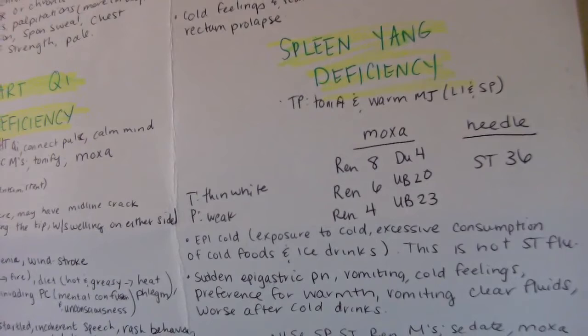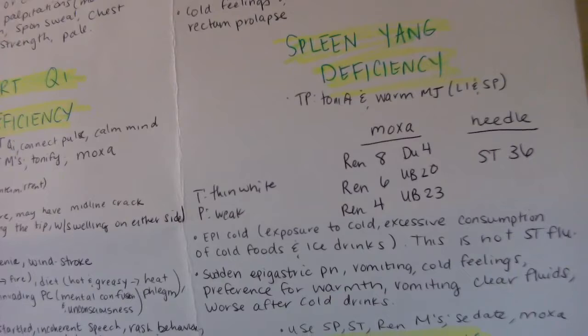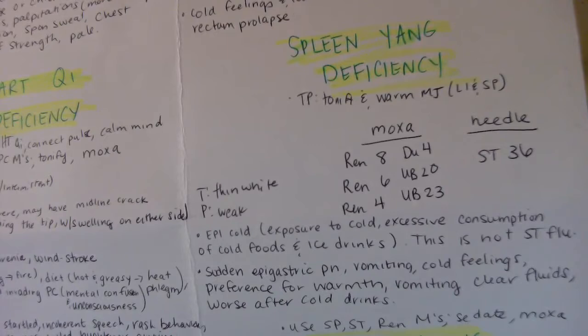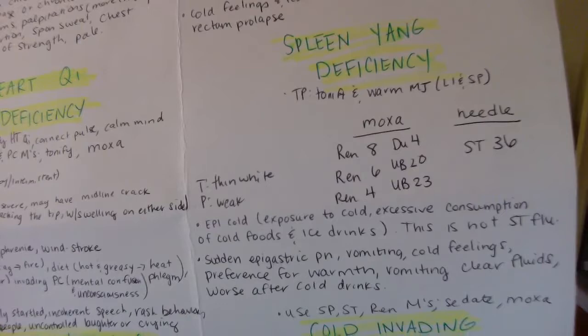The tongue for spleen yang deficiency is thin white coat and the pulse is weak. Treatment principle is to tonify and warm the middle jowl, large intestine and spleen. We're going to needle one point, stomach 36, and moxa six points. The moxa is ren eight, ren six, ren four, dew four, ubi 20, and ubi 23.